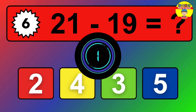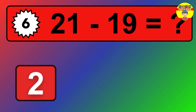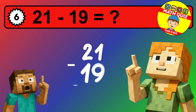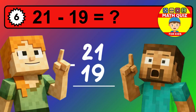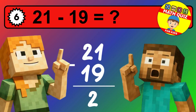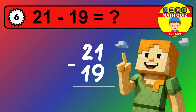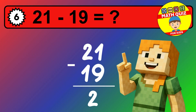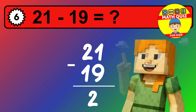1 minus 3 is not possible, so we need to regroup. We take one 10 from the tens column. Now we have one tens, and the units become 11. Now we subtract. 11 minus 3 is 8. Then we go to the tens. 1 minus 1 is 0. The final answer is 8.